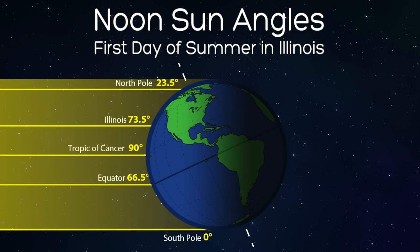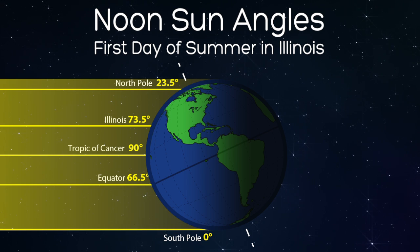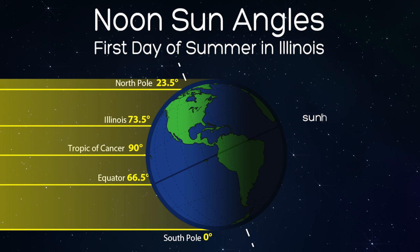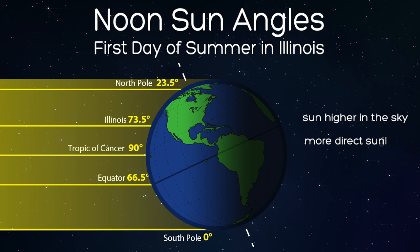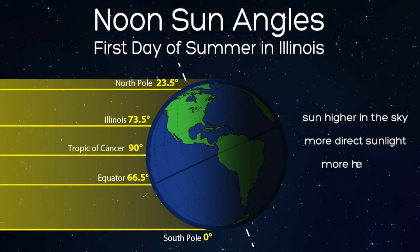During the summer in Illinois, the position of the Earth to the Sun makes the north half of the Earth tilt towards the Sun. This makes the Sun appear higher in the sky. The higher the Sun, the more direct sunlight hits the Earth. This concentrates sunlight into a smaller area, causing more heating.